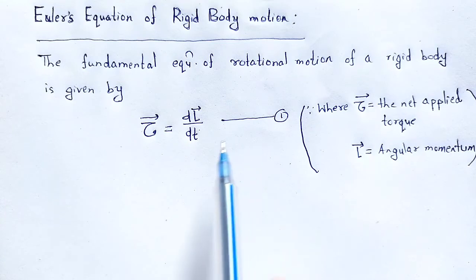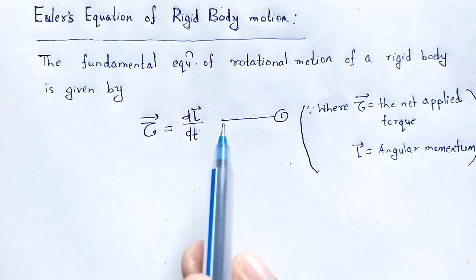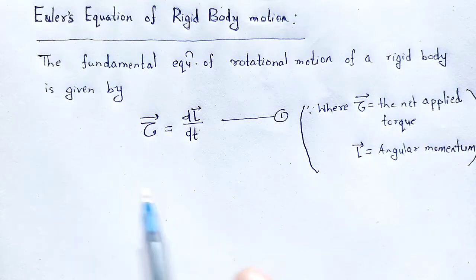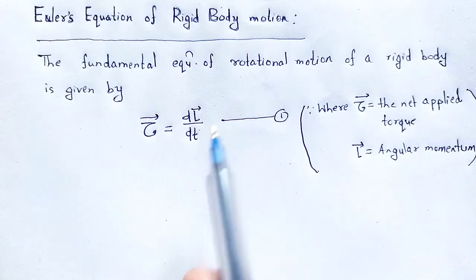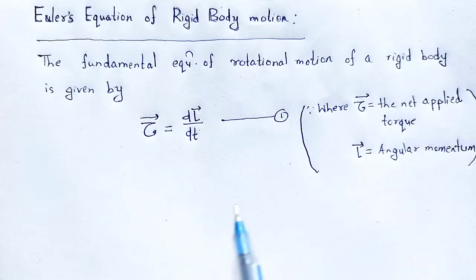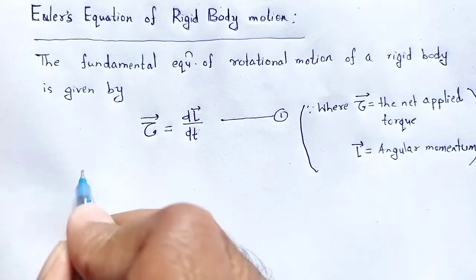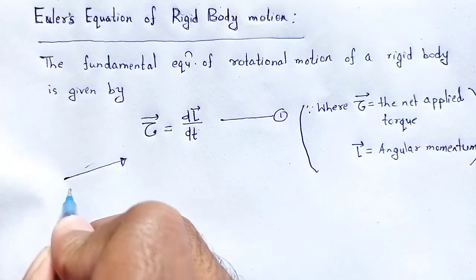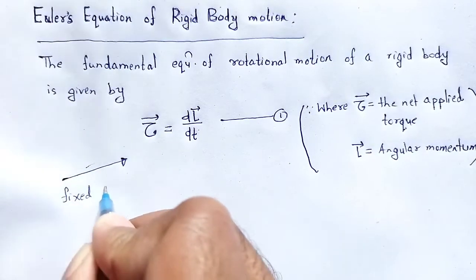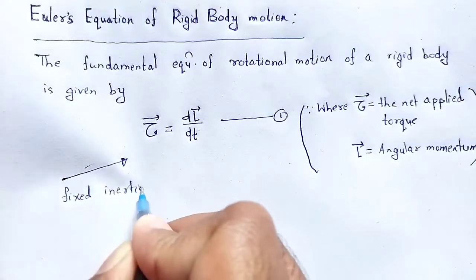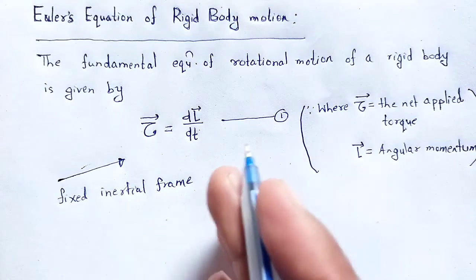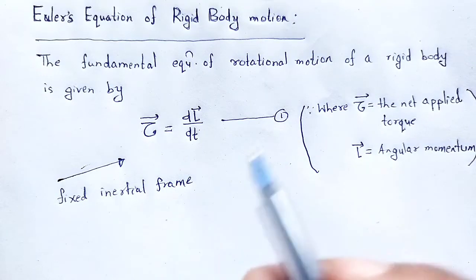This equation holds for a fixed inertial frame. However, in a coordinate system rotating with the rigid body, equation 1 needs some modification. It is valid for a fixed inertial frame, but when we take a rotational frame, that equation needs some modification.